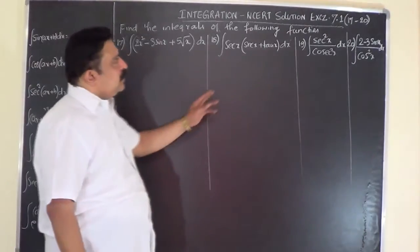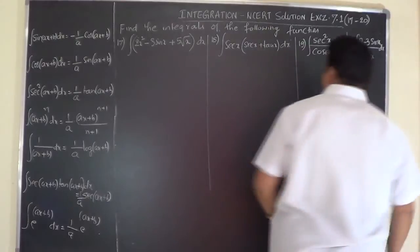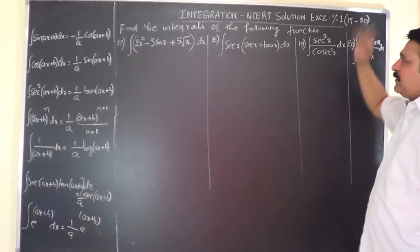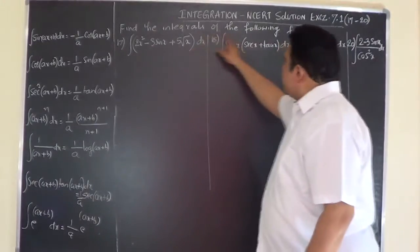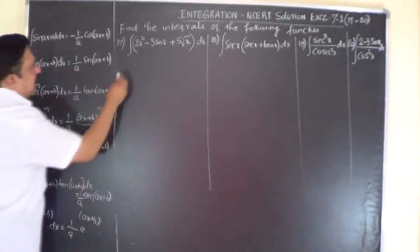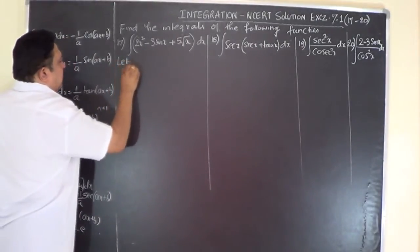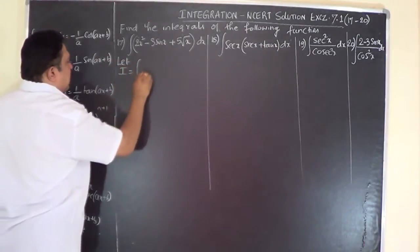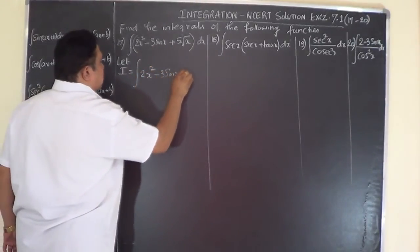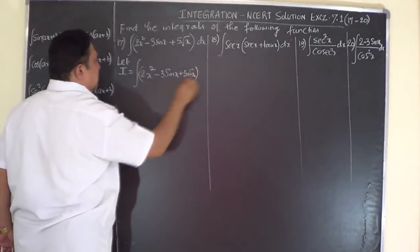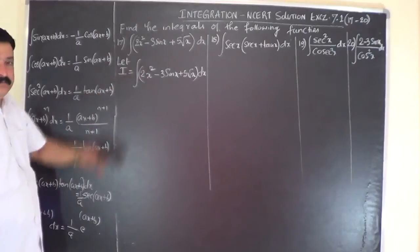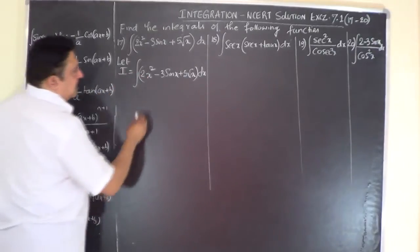We will now go ahead with the next four problems, that is problem numbers 17 to 20. Find the integrals of the following functions. Problem 17: let I be equal to the integral of 2x squared minus 3 sine x plus 5 root x, dx. Write the problem as it is.